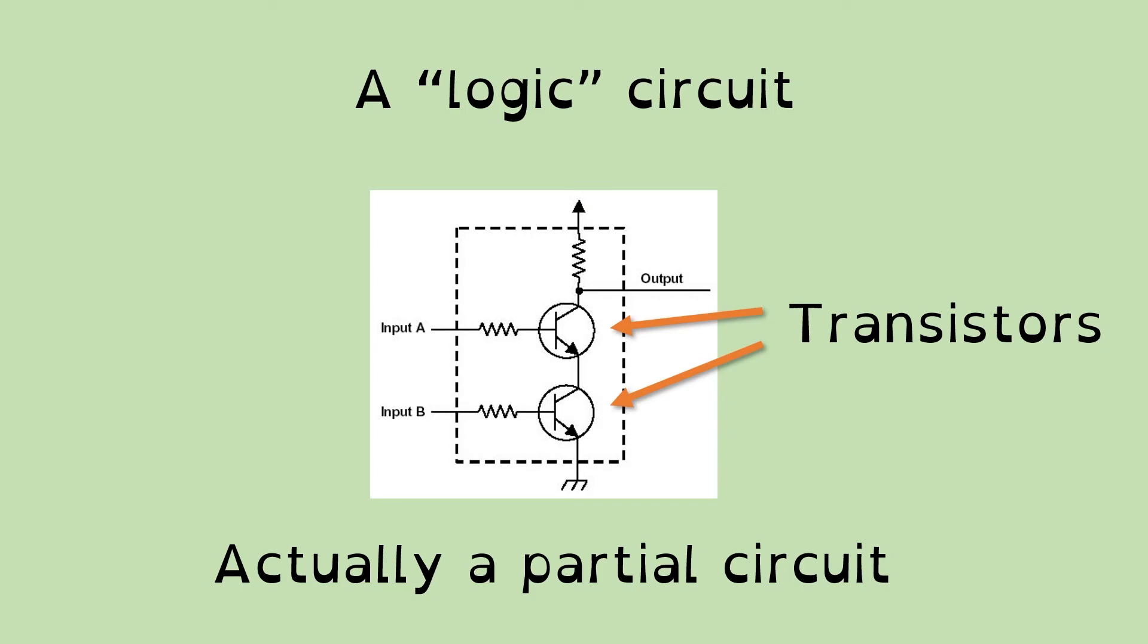And these wires will hold what's called a signal, which means electricity coming in, which is a combination of a voltage and a current. And that voltage and current will change over time.